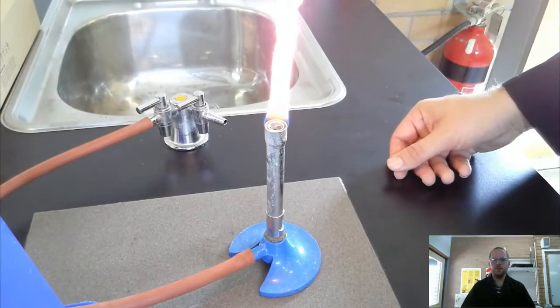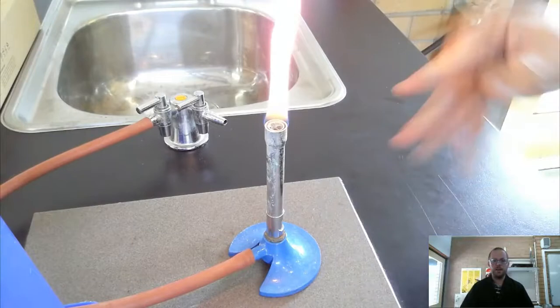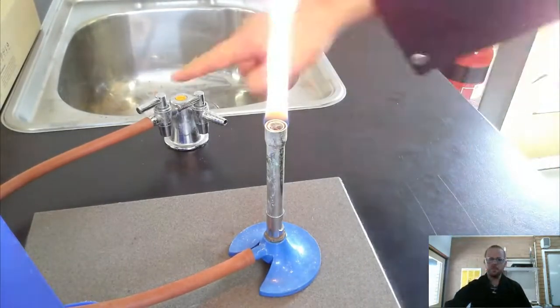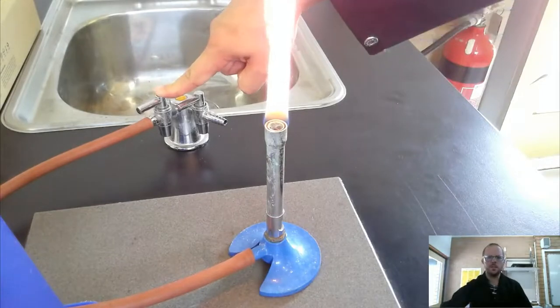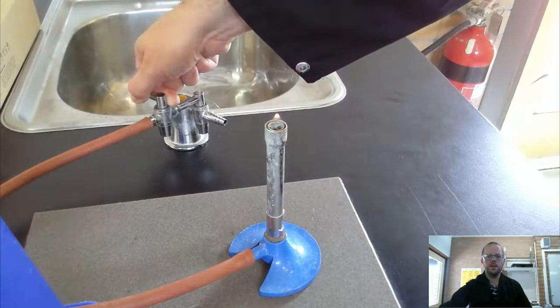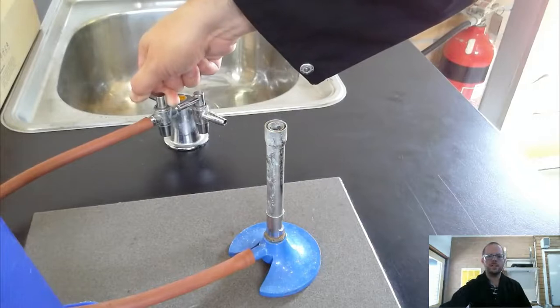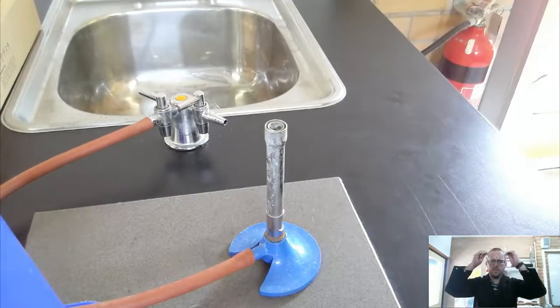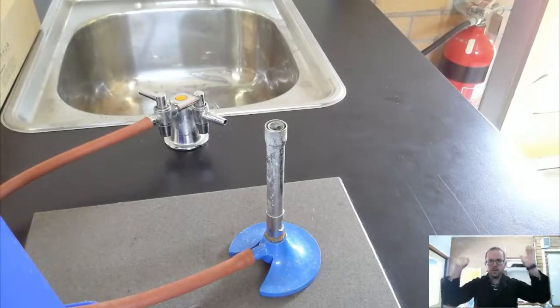And then finally to switch our Bunsen off, I don't snuff out the flame like a candle. You don't ever do that because the gas is still on. Notice my tap is still on. What I have to do is turn the tap off, and you notice that the Bunsen goes out because the gas stops. And now I can take my safety glasses off because I'm finished. Only after you've finished.